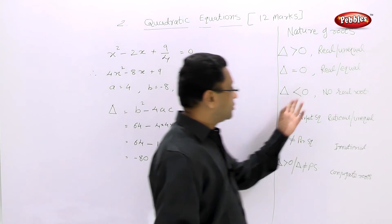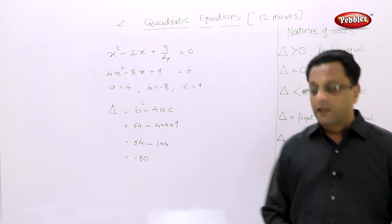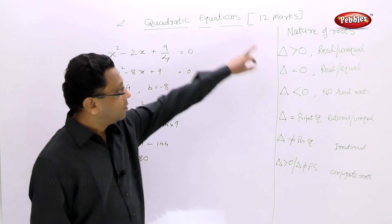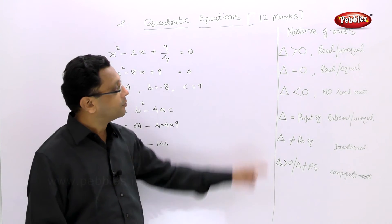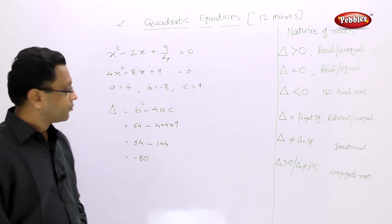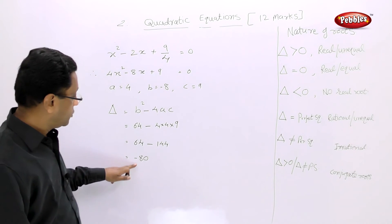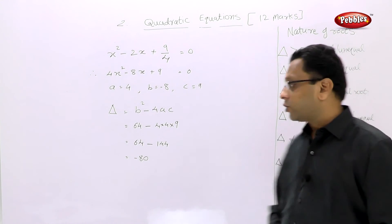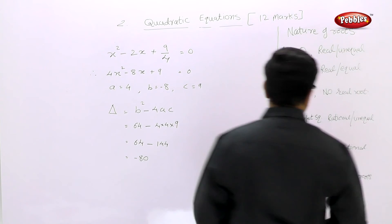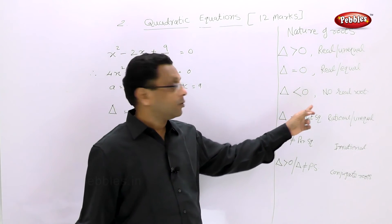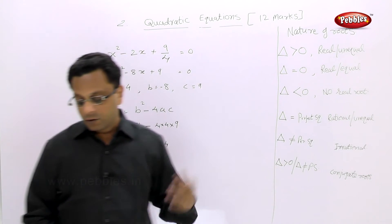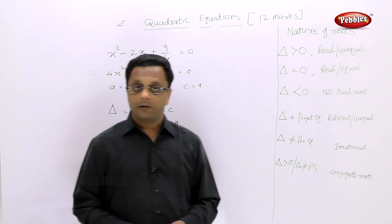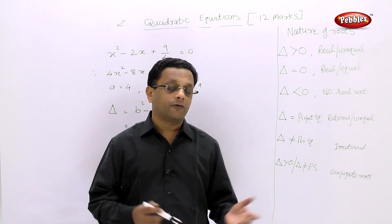Your discriminant is less than 0, so there are no real roots. The nature of roots is: delta < 0, no real roots. Similarly, you will be given a quadratic equation and asked to find the nature of its roots. I hope you understood how to do this.